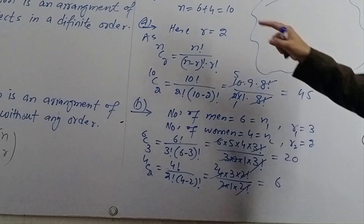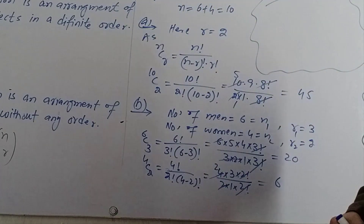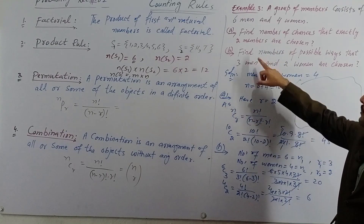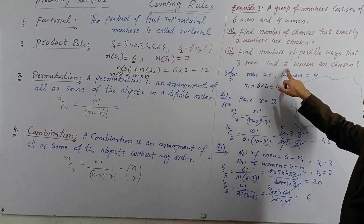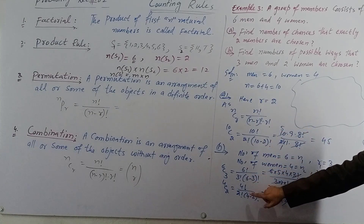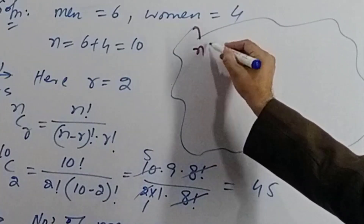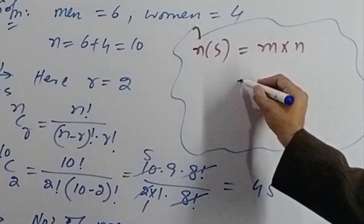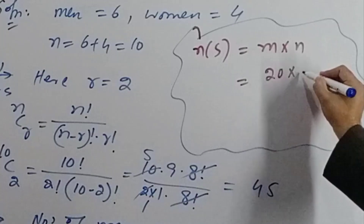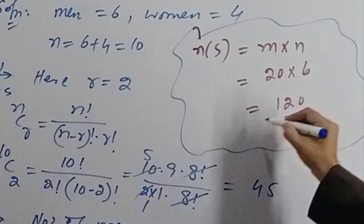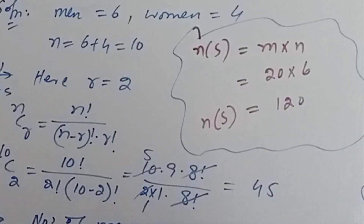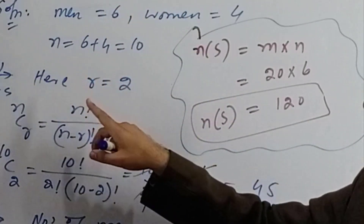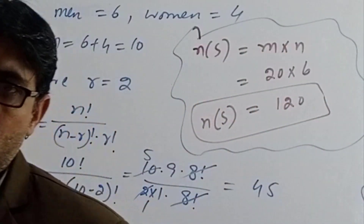So men can be chosen in 20 ways and women in 6 ways. Since both selections happen together as a compound experiment, by the product rule, the total number of possible ways to choose three men and two women is 20 multiply 6 equals 120. So there are 120 possible ways to select three men and two women from this group of ten.